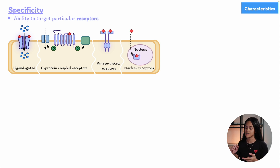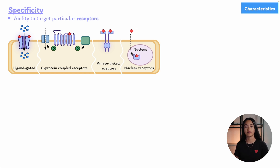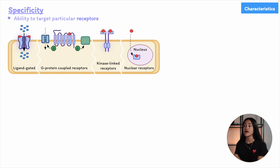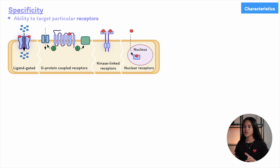For a drug to be effective it must interact with specific targets such as proteins, enzymes, or receptors, modifying physiological or biochemical processes through specific chemical interactions such as covalent bonds or electrostatic interactions. A drug's ability to bind to its target depends on both the drug and the target's structure, and when it binds it can either activate or block the target's function, causing a biological response.